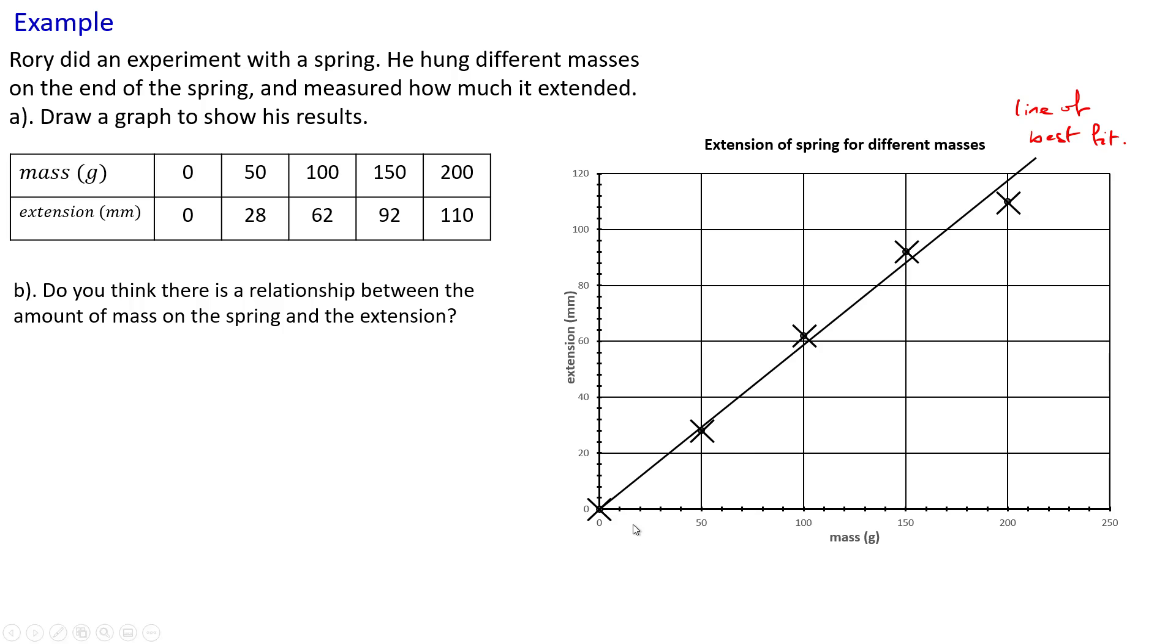Okay, so let's have a look. Every time we increase the mass, when it's zero, it's not extended. When we put 50, it's at 28. When we put more mass on, so we double the mass to 100, then we've nearly doubled, well it's more than doubled, the extension of the spring. So we stretched it. And when we keep on adding more mass, the more mass we add on, the more we extend the spring. So there's a relationship there between the mass and the extension of the spring.